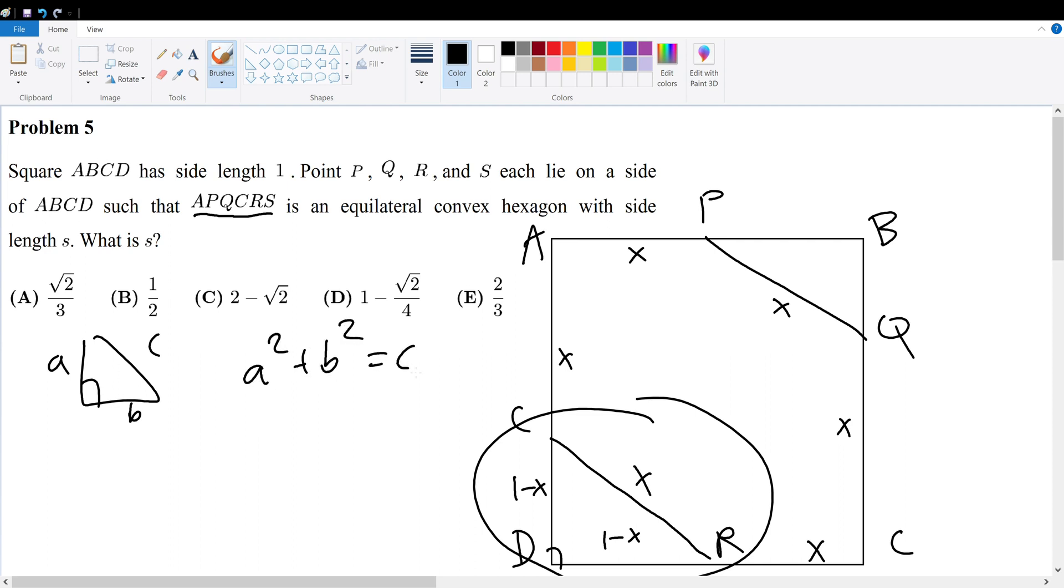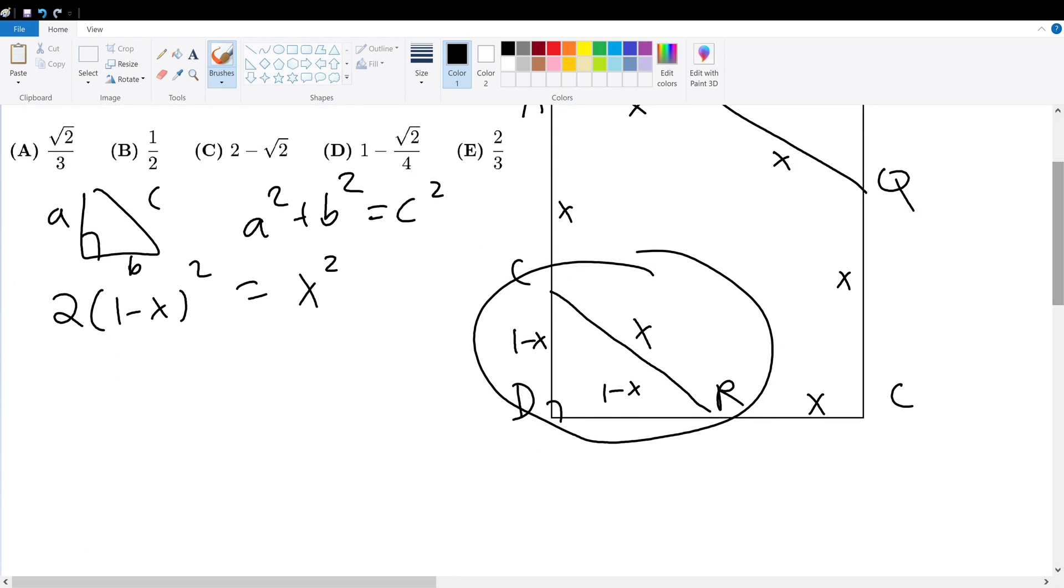H squared plus P squared is equal to C squared. Very famous. So, from the expression, 2 times (1 minus X) squared must give X squared. So we can solve for X because we have one equation and one variable.